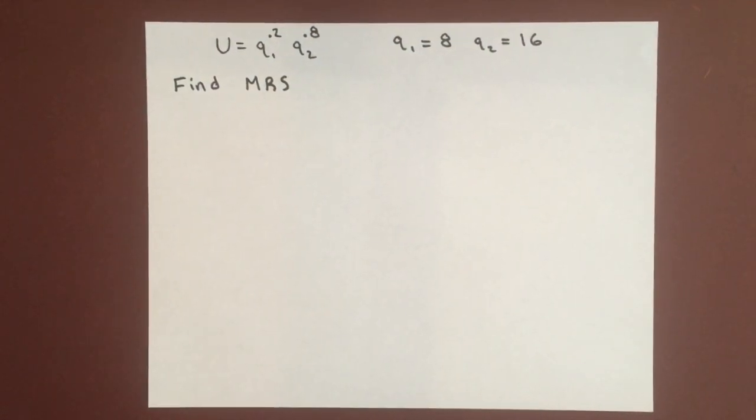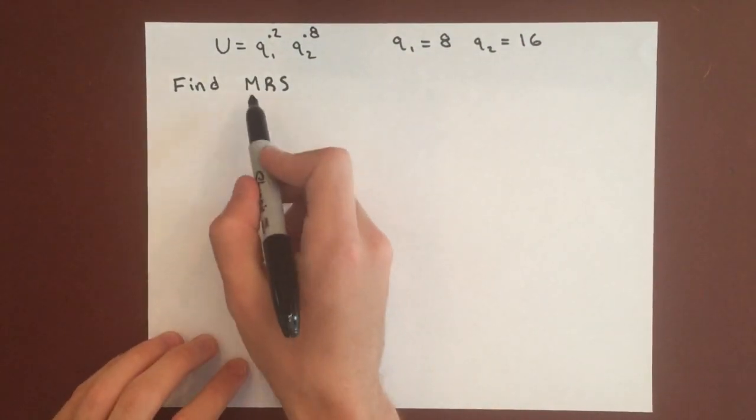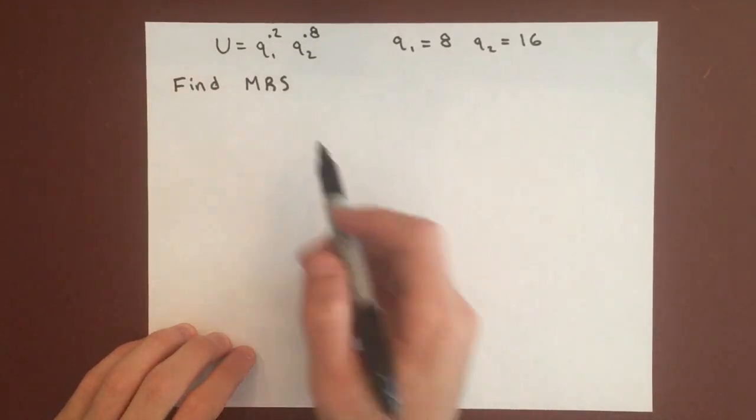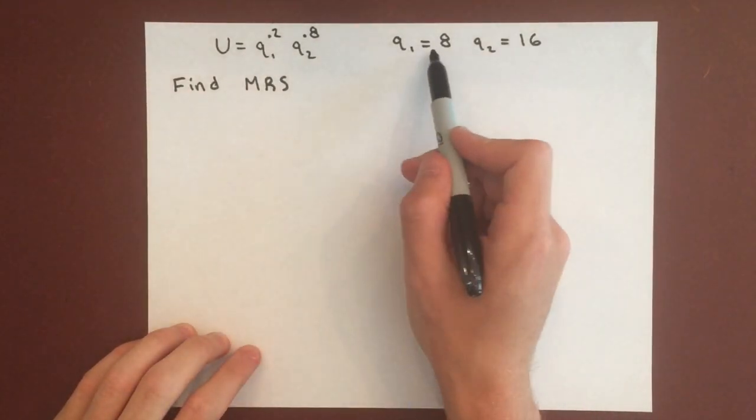In this video, we're going to do an example trying to find the marginal rate of substitution given this utility function and these two quantities.